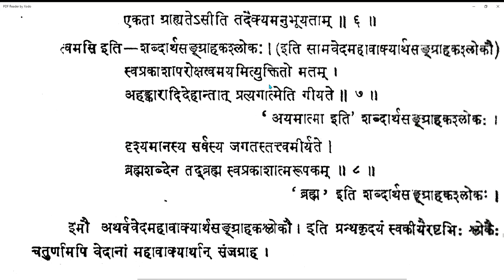Svaprakasha Aparokshattvam Aya Mityuktito Matam — Ahankaradi Dehantat Pratyagatma Iti Giyate. The same entity is called as Pratyagatma because, starting with Ahankara ending with Deha outward — Anandamaya Kosha where individuality cannot be felt in Sushukti, comes alive in Svapna and Jagradavasta. Thereby Vijnanamaya Kosha helps us that there has been an Anandamaya Kosha Samandha which is Ajnana Samandha — Karana. Only from the Karyadrishti can Karana be analysed.